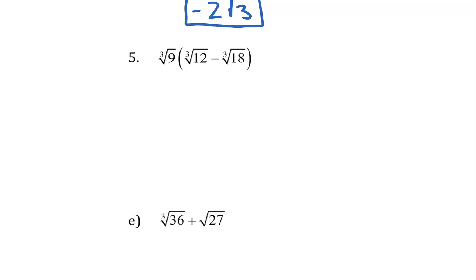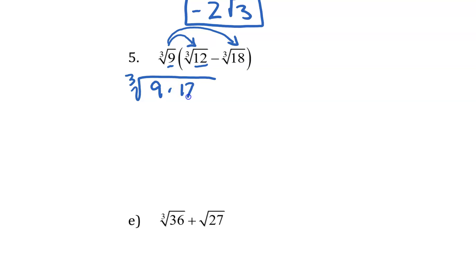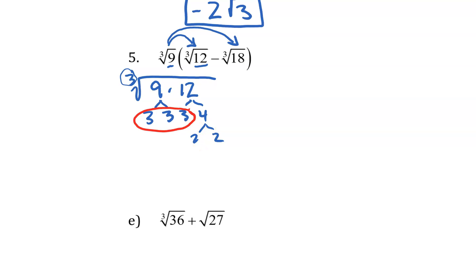On problem number 5, we're looking at a distribution problem before we can start our subtraction. I'm going to distribute the cube root of 9 times each of the terms inside the parentheses. When I do this, I'm not going to multiply them together — I'll just leave them together inside the radical. So the cube root of 9 times the cube root of 12 is the cube root of 9 times 12. Factoring: 9 is 3 times 3, 12 is 3 times 4, and 4 is 2 times 2. It's a cube root, so I need 3 of a kind — I have three 3's. Stuck inside my radical I still have 2 times 2 or 4. So this becomes 3 times the cube root of 4.